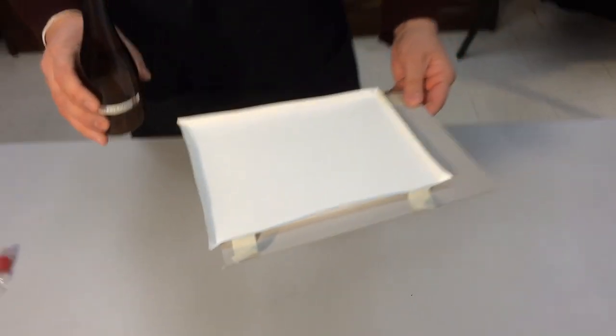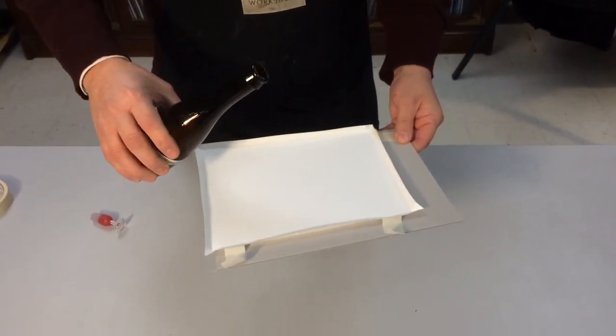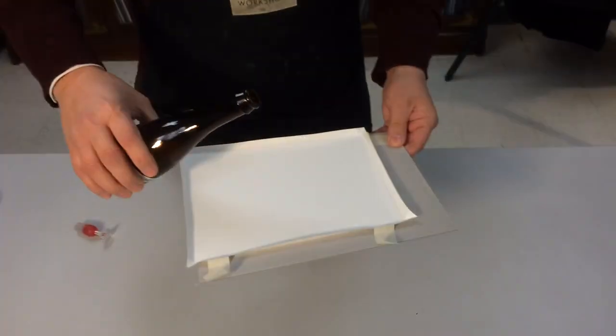Now, this is the collodion chloride emulsion. It contains collodion, silver nitrate, and strontium chloride. I'm going to pour it very similar to coating a collodion plate.